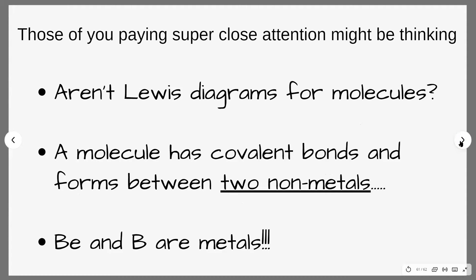For those paying close attention who remember how the periodic table is arranged, you might be thinking: didn't you say Lewis diagrams were just for molecules? In year 11 you're taught that a molecule forms when two or more non-metals share their electrons — so molecules have covalent bonds. You might have noticed that beryllium and boron are actually metals, and when metals and non-metals interact they form ionic bonds where the metal gives electrons to the non-metal. We don't draw Lewis diagrams for ionic compounds. If you can't remember the difference between molecules, ionic compounds, covalent bonds and ionic bonds, there is a video in the links below that recaps those concepts.